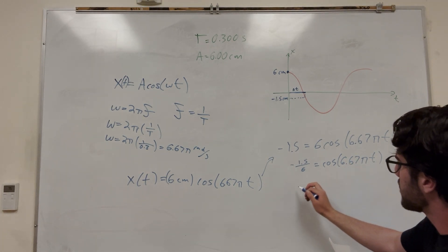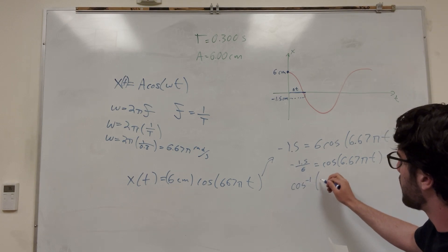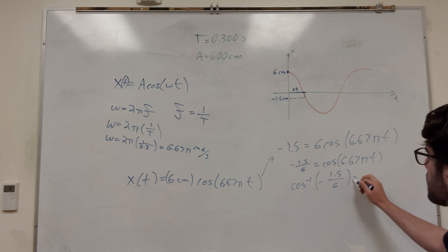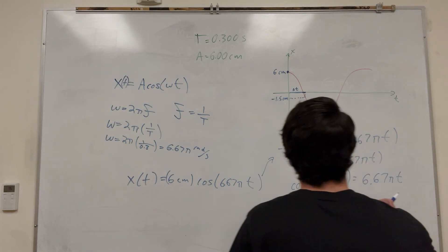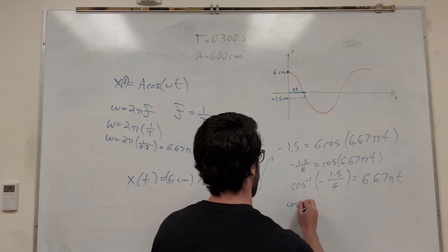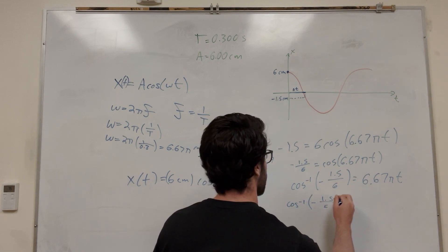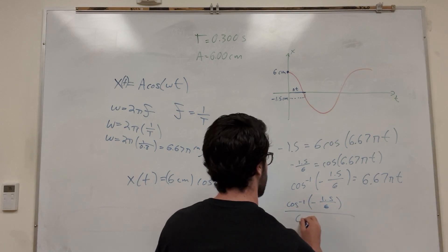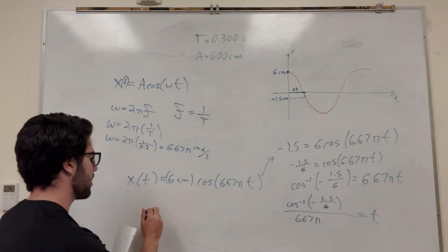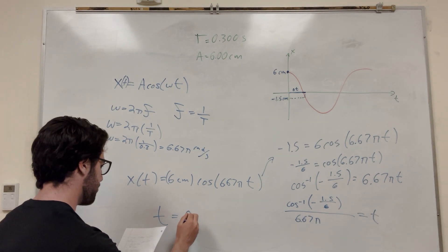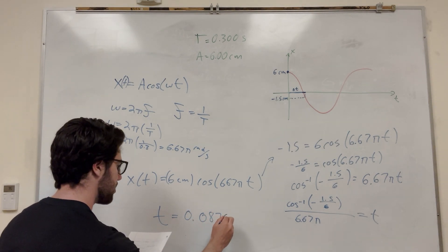So now we're going to take the inverse cosine of this. So cosine inverse of negative 1.5 divided by 6 is equal to, and then the inverse cosine of this side is just going to be the inside of it, 6.67 pi t. So then what you're going to want to find is then you're going to have to divide it by 6.67 pi just to get t by itself. So cosine inverse of negative 1.5 over 6 divided by 6.67 pi is equal to t. So then if you plug this in, you're going to get t by itself. t is equal to 0.0870 seconds.